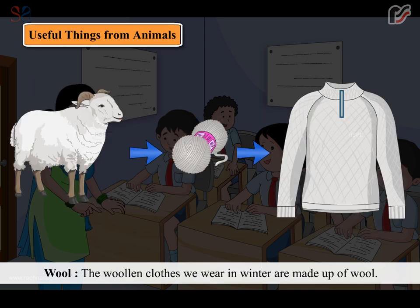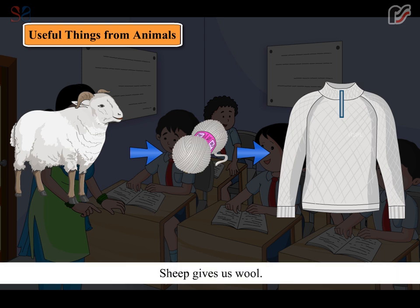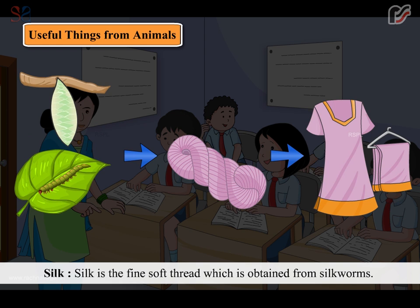The woolen clothes we wear in winter are made up of wool. Sheep gives us wool. Silk is the fine soft thread which is obtained from silk worms. They are found on the mulberry tree.